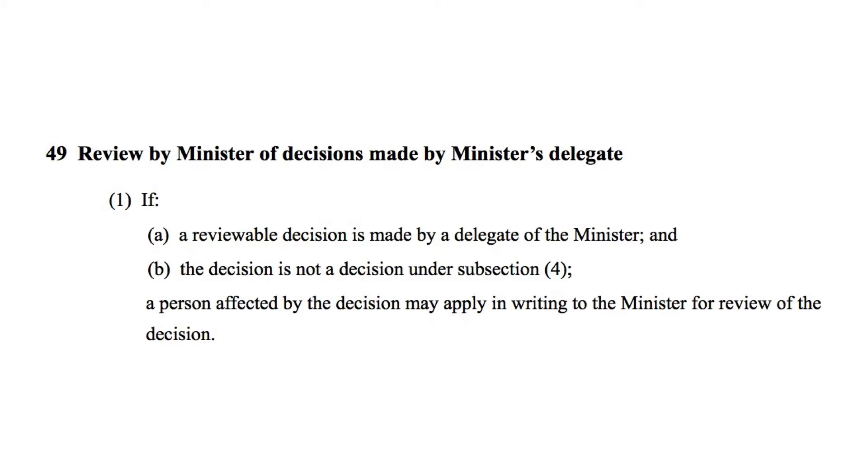In virtually all cases, when an administrative decision is made, the system provides for some form of internal review. Most of the time, a decision document will actually tell people that they have the right to request that the decision be reviewed internally. For example, under the Australian Passports Act, section 49 says that if a decision is made by a delegate of the minister, a person may apply to the minister to review that decision. This is internal review — no need for court, no need for the AAT, it's all just done in-house.